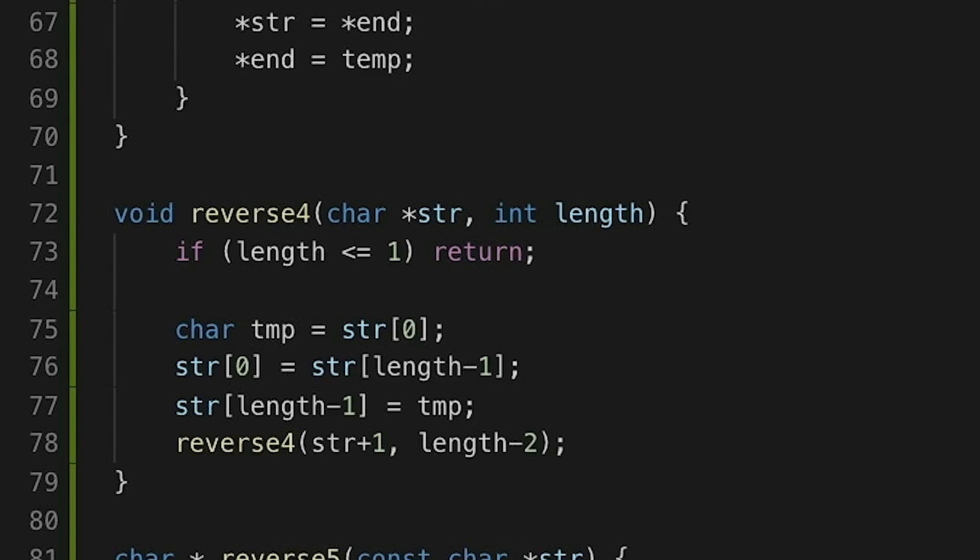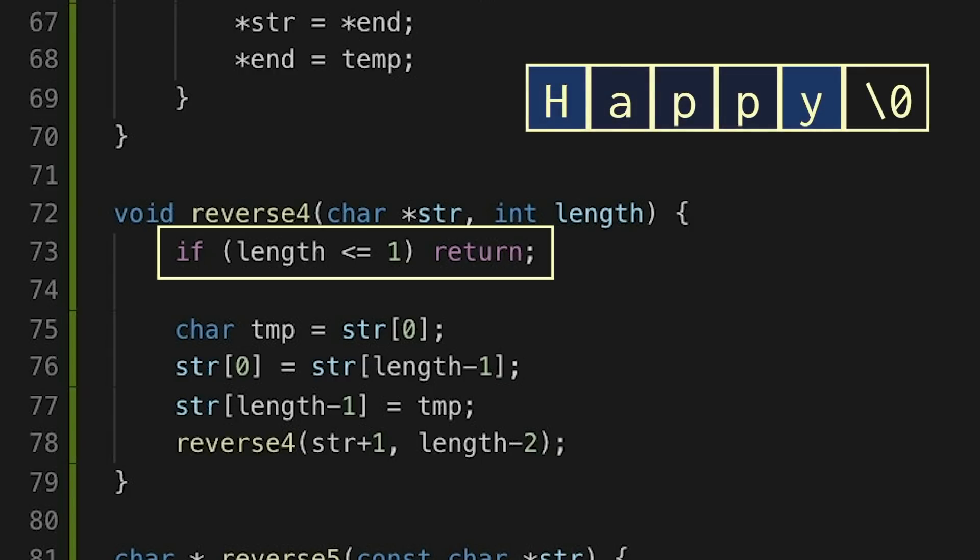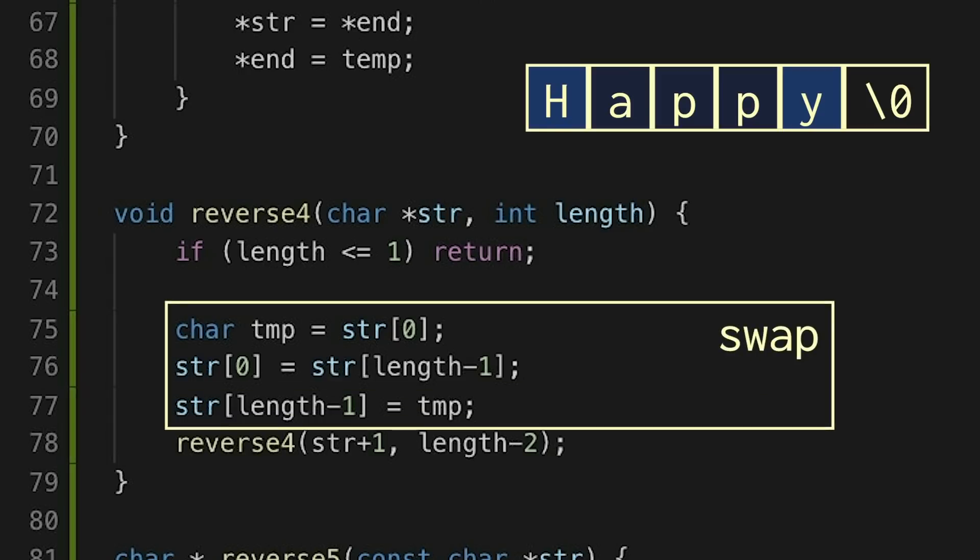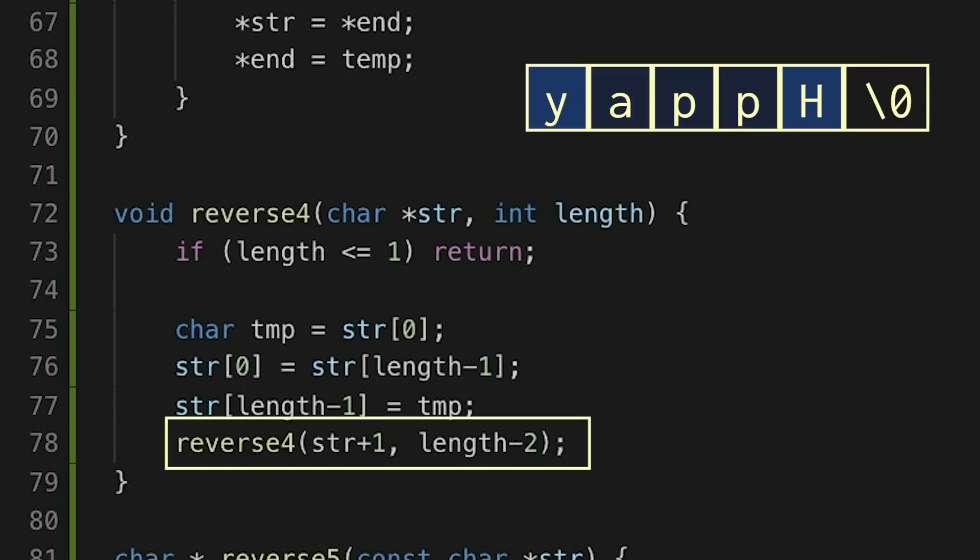So what we're going to do is first check to see if the length is 0 or 1. If it is, then there's nothing to do. The string's already reversed, so return. So for all other cases, we know we have at least two elements in our string. So I'm just going to swap those two elements, the outside elements, just like we have in our other functions. And then I'm going to call this function, reverse4, on the inside part of the string. And that inside string will have two fewer characters, so we'll decrement the length by 2.